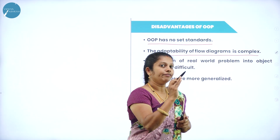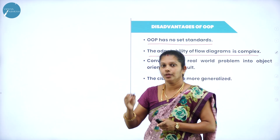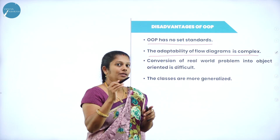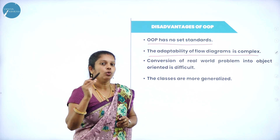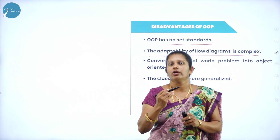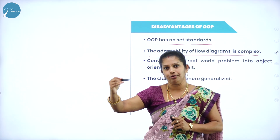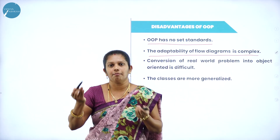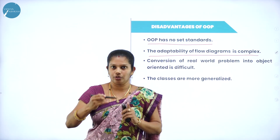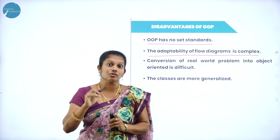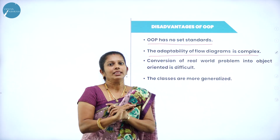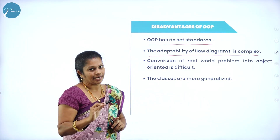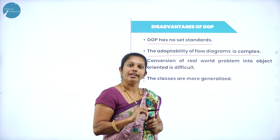In procedural, it mainly concentrates on procedure rather than data. Whereas in Hoops, it mainly concentrates on data, not on procedure. For example, if I want to reach from the fourth floor to the ground floor — in procedural oriented, I go step by step: third floor, second floor, first floor, then ground floor. That is a procedure. Whereas in object oriented, we do not need all the steps. My agenda is to reach from fourth to ground floor, so I can jump directly. That means we are not following systematic rules and regulations — simply we want the final output. That's why it is not a set of standards, and writing the flowchart is also very difficult.